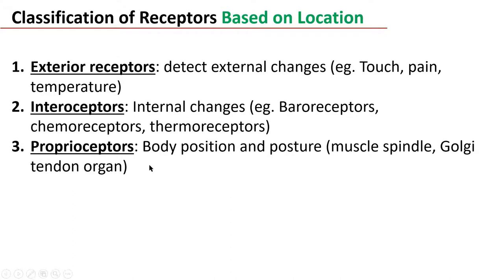Then proprioceptors — these receptors are for body position and posture. The receptors in this category are the muscle spindle and the Golgi tendon organ.